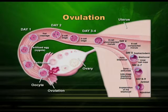If ova is not fertilized, it will die. Now try to see up to what point it has reached in two days — hardly one-third. And if it is not fertilized, it will die at this point. It will not reach the uterus.